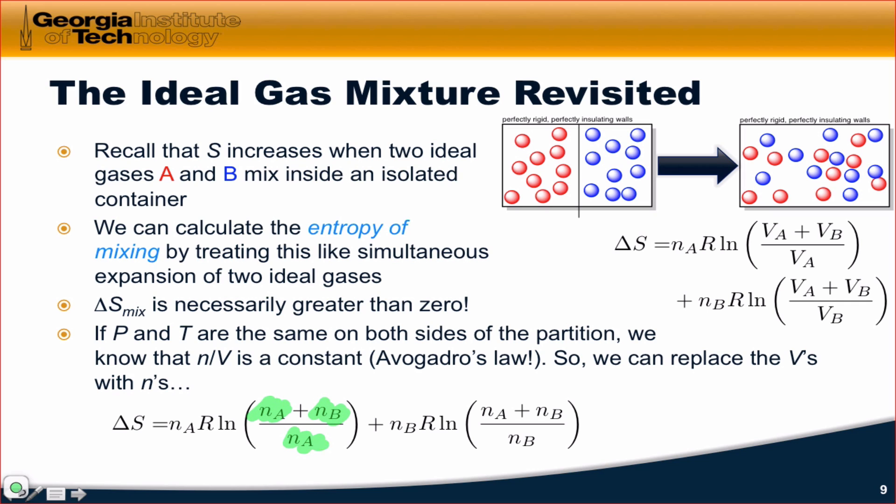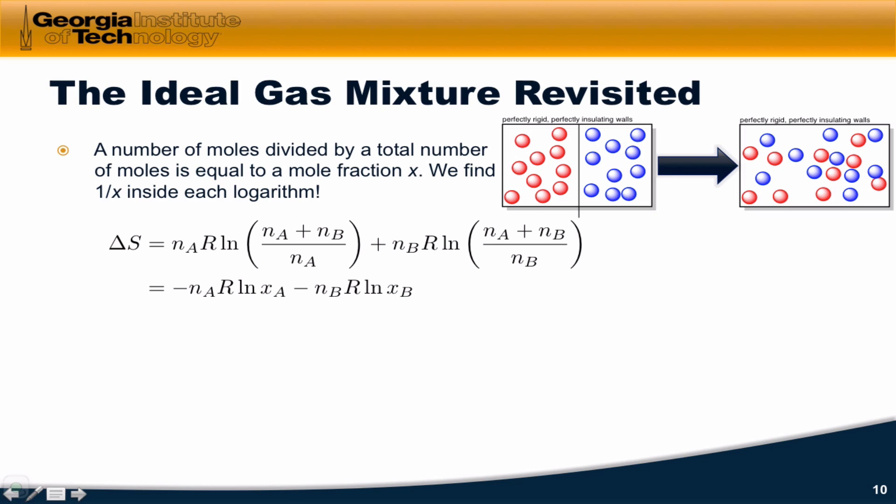The only thing I've done here is I've taken each volume and replaced it with the corresponding number of moles, NA plus NB divided by NA in the first logarithm, and NA plus NB divided by NB in the second logarithm. This is going to lead us to a more compact expression for the entropy change that uses a more convenient, conceptually convenient quantity. The thing is, a number of moles divided by a total number of moles is equal to a mole fraction X. For example, the mole fraction of XA in the mixture is equal to the moles of A divided by the total number of moles, N sub A plus N sub B. Notice that in the first natural logarithm, the argument of that natural logarithm is just 1 over XA. And in fact, the same idea applies to the second logarithm, it's really just 1 over XB.